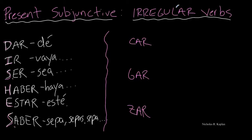The two that I want to point out to you are estar, which just be aware that it does take an accent all the way through. And the other one is dar. Now dé has an accent, but des does not. Dé does. Demos does not.